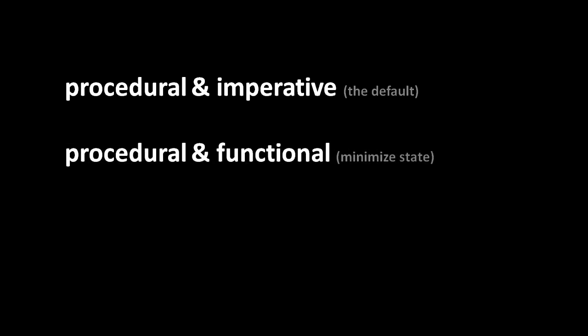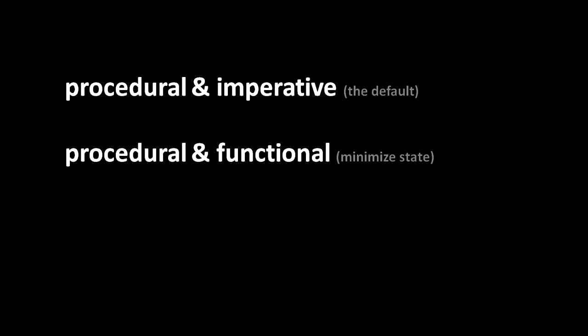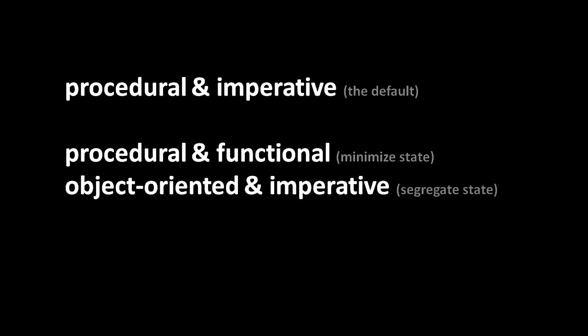Starting in the 60s, as programs got more complicated, people began thinking about how to solve the problem of shared state. We got two major prescriptions. One says code should be procedural yet functional — most functions should be pure, not dealing with state, minimizing or eliminating it. The other says code should be object-oriented and imperative: we segregate state by packaging it into encapsulated units called objects, and divide-and-conquer the problem that way.